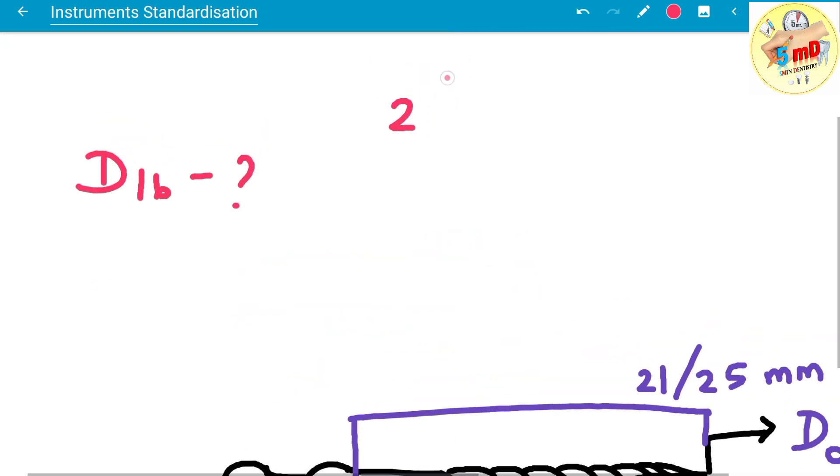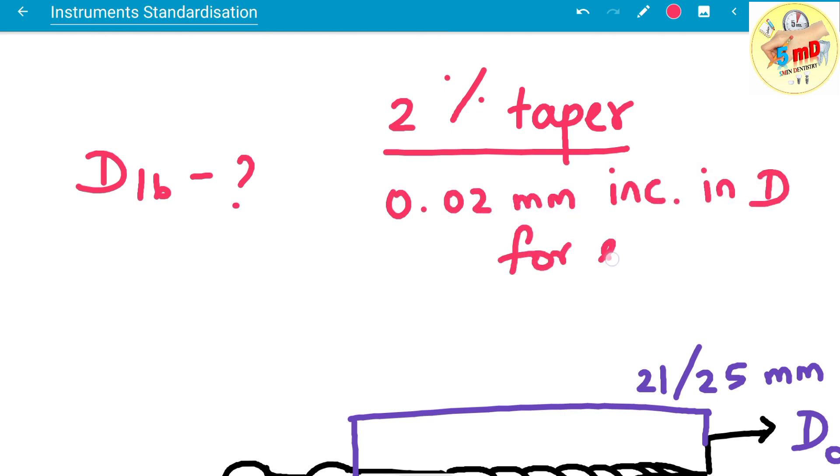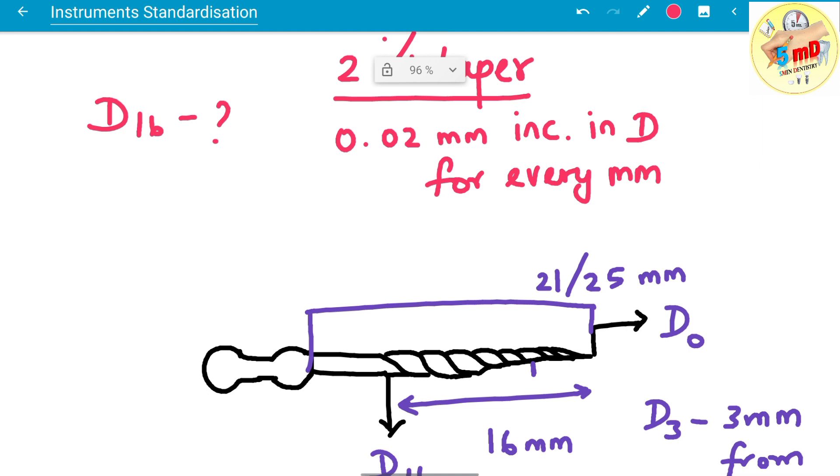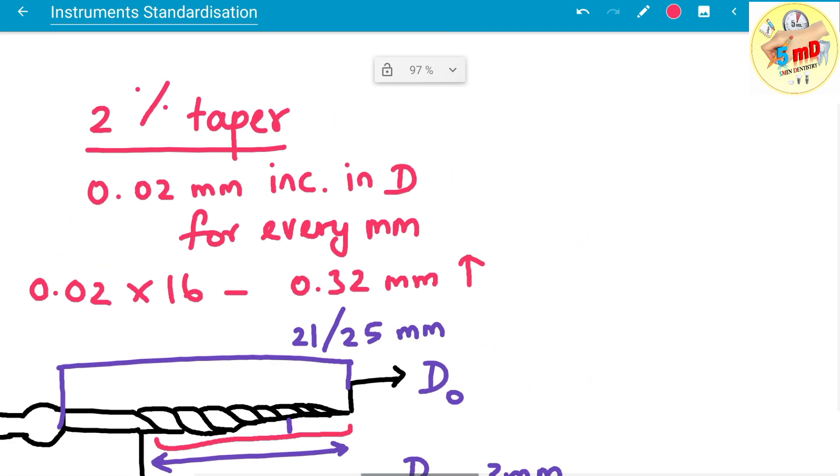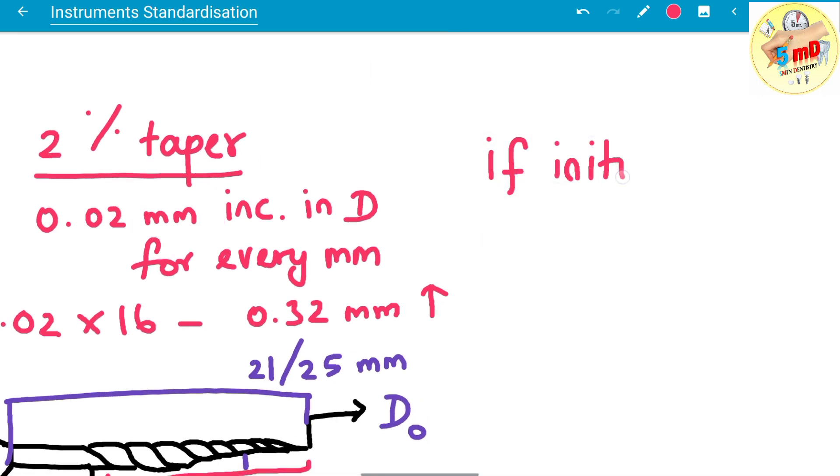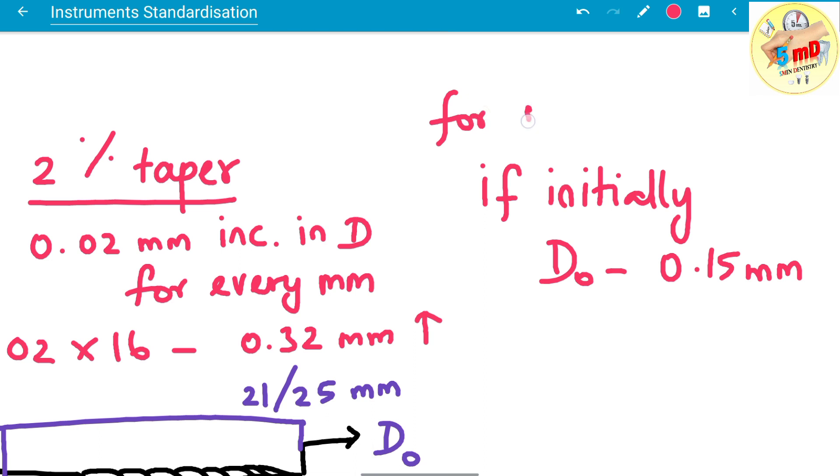At d16, if the instrument is a 2% taper instrument, that is there is an increase of 0.02 mm in diameter for every mm in length, then at d16 you will have 0.32 mm increase in total diameter when compared to the initial diameter. If d0 is 0.15, for example, you have d16 as 0.32 plus 0.15, which is 0.47.